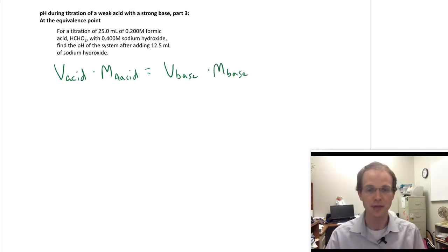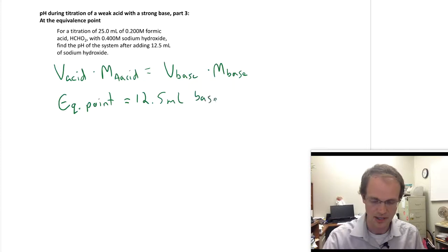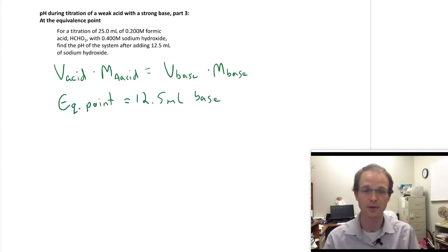And if you plug in our numbers there, so you plug in for V acid, you'd say we have 25 milliliters. For molarity, 0.2. For the molarity of the base, we have 0.4 molar. What you'd find is that the equivalence point, when the acid and the base have been neutralized, we have as much H plus as OH minus is 12.5 milliliters of base. And that's what we have in this problem.